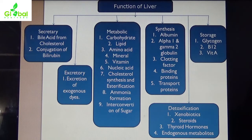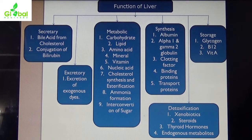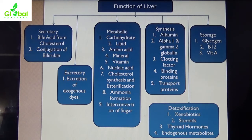Then storage. The liver also performs as a storage organ. In the liver, glycogen, vitamin B12, and vitamin A are stored as in a storehouse. Whenever the body feels a lack of vitamin B12 or vitamin A — if we don't receive supplementation from outside or in our food — then the liver releases its stored vitamin A and vitamin B12. Glycogen is also stored in the liver.